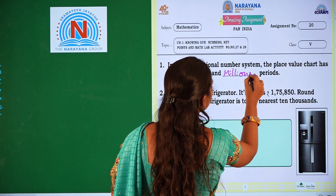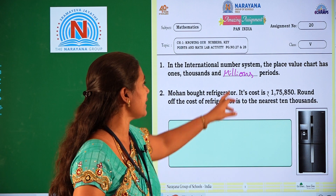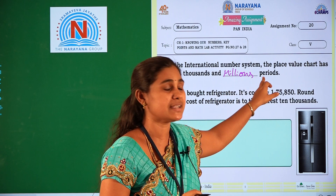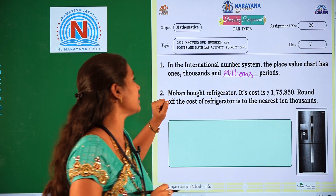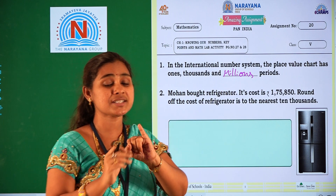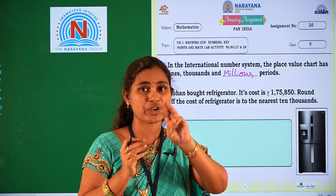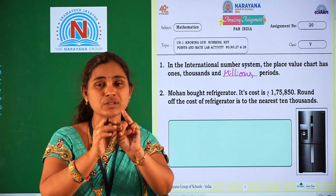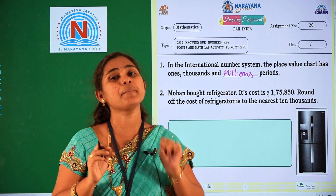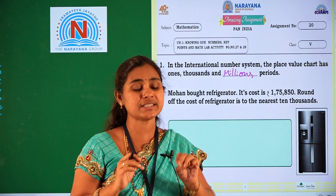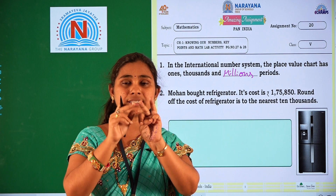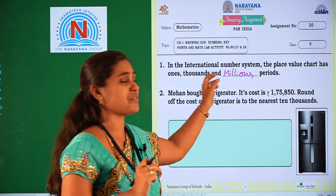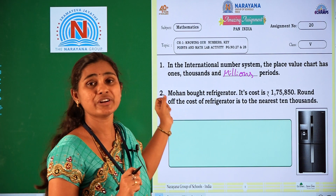Spell the word millions: M-I-L-L-I-O-N-S. Millions. In the international system of numeration we have three periods — ones, thousands, and millions. That is our first question — a direct question.